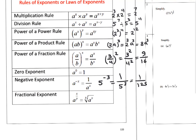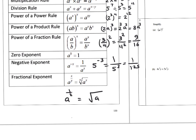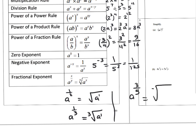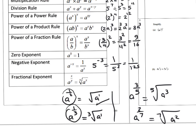Fractional exponent rule: for a^(x/y), the numerator is the power and the denominator is the root. For example, a^(1/2) means the square root of a. a^(1/3) means the cube root of a. a^(3/5) means the fifth root of a^3. a^(2/7) means the seventh root of a^2. Remember: a^(1/2) is the square root of a, and a^(1/3) is the cube root of a.